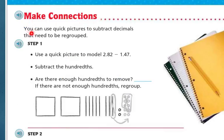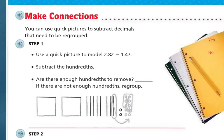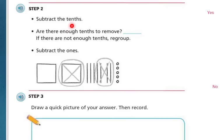Making connections. You can use quick pictures to subtract decimals that need to be regrouped. Step 1: Use a quick picture to model 2 and 82 hundredths minus 1 and 47 hundredths. Subtract the hundredths — are there enough hundredths to remove? The answer is no. Step 2: Subtract the tenths. Are there enough tenths to remove? The answer is yes.